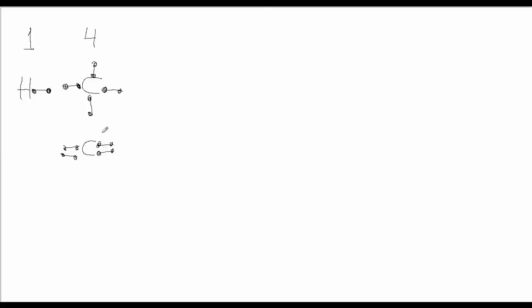Carbon could also form two double bonds, bringing four electrons to the sharing party and picking up four more when it forms covalent bonds with other atoms. Carbon could also form two single bonds and a double bond — still having four valence electrons, bringing four electrons to the sharing party and picking up four more.